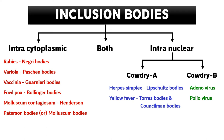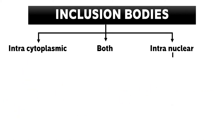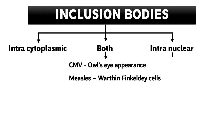Now let us talk about the intermediate category — both intracytoplasmic as well as intranuclear inclusion bodies. Under this we have two examples. The first is cytomegalovirus: in CMV-infected cells, apart from regular intranuclear inclusion bodies, we also have perinuclear inclusion bodies, giving a typical owl's eye appearance. In measles we also have both intranuclear and intracytoplasmic inclusion bodies. Note that the term Warthin-Finkeldey refers to the infected cells, not the inclusion bodies themselves.